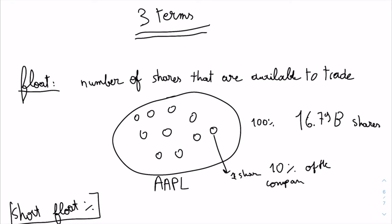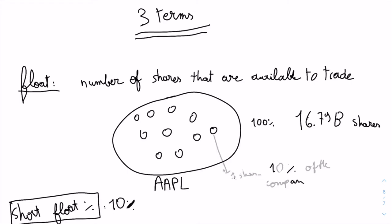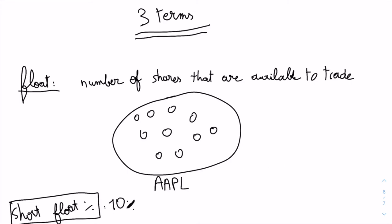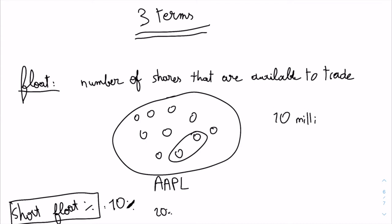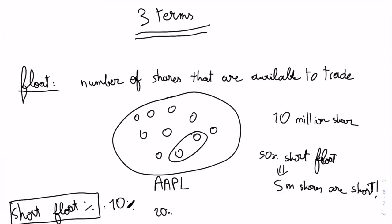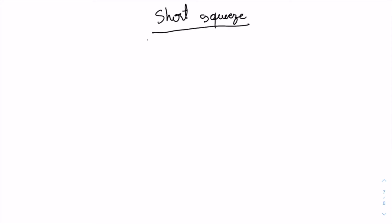The second term is short float percentage. Short basically means you make money when the stock price goes down — if you first sell, then buy. For example, a short float percentage of a company is 10%. On the Apple case, that means one share of Apple is shorted. 20% means two shares are shorted. Let's take another example: a company has 10 million shares with a 50% short float — that means 5 million shares of the company are shorted.